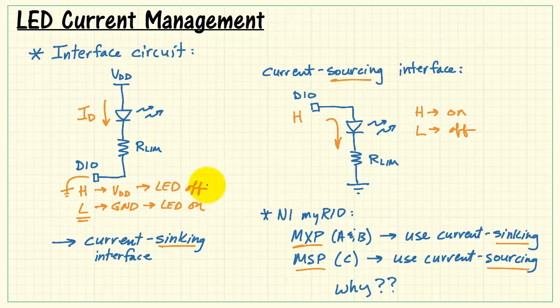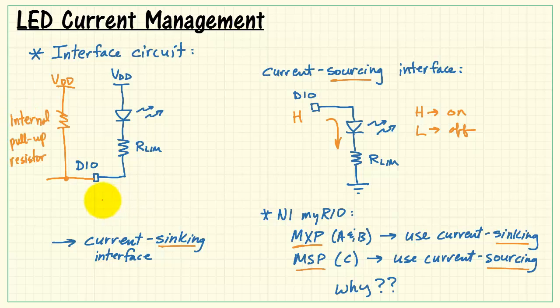Let's consider again the current sinking interface form. When we connect this to the MXP connector, we have an internal pull-up resistor to VDD. When the DIO is in input mode, then this connection back into MyRIO is in high Z. That is, high impedance, or it looks like an open circuit. Now, consider the current through the LED. Well, with this path, we have no voltage drop across the LED. Therefore, we have zero current, and the LED is off.